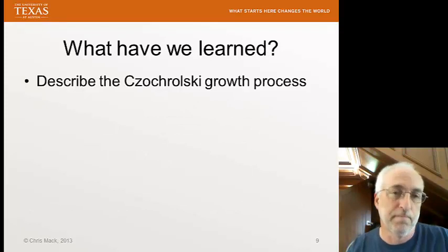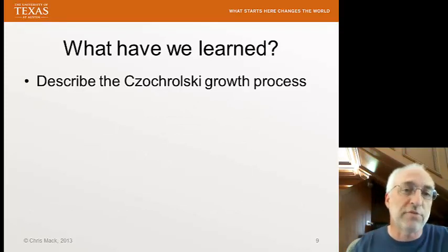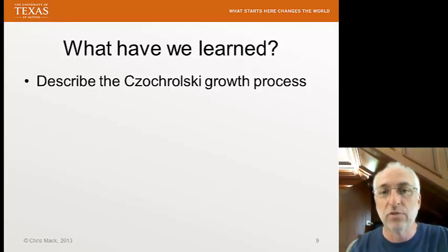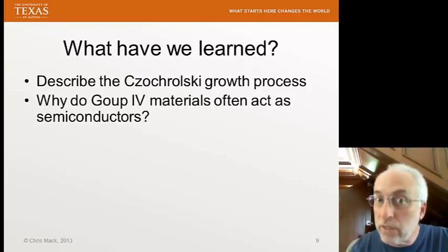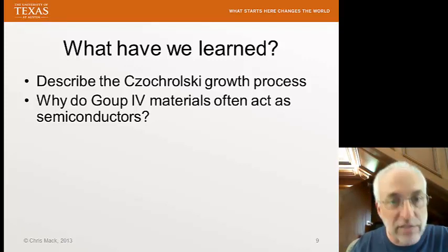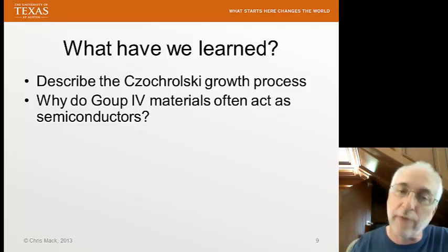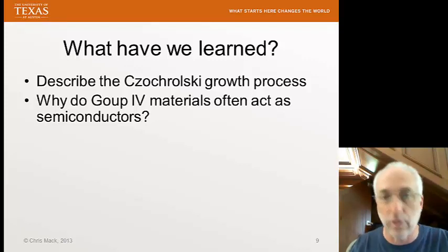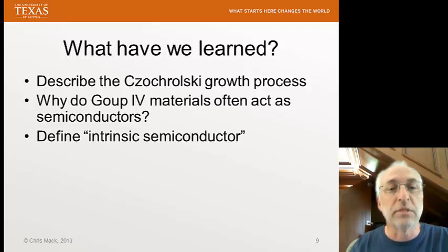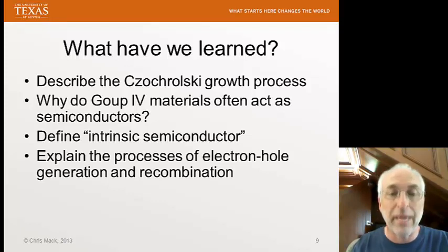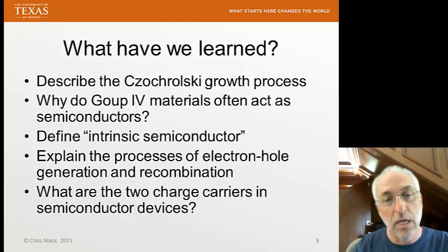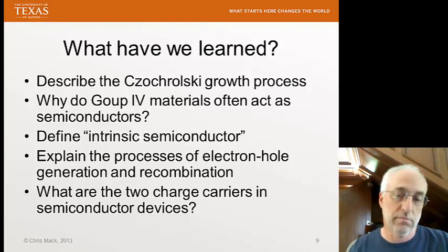So, what have we learned so far? What you should be able to do after understanding this lecture, you should be able to describe the Czochralski growth process, how silicon wafers are made. Understand why we use group 4 materials to make semiconductors, or when we use compound semiconductors, why we use group 3 and group 5 in combination. It'll have the same kinds of properties. You should be able to define an intrinsic semiconductor, explain the process of electron hole pair generation and recombination, and understand what the two charge carriers are in a semiconductor device. Well, thank you, and we'll see you for the next lecture.